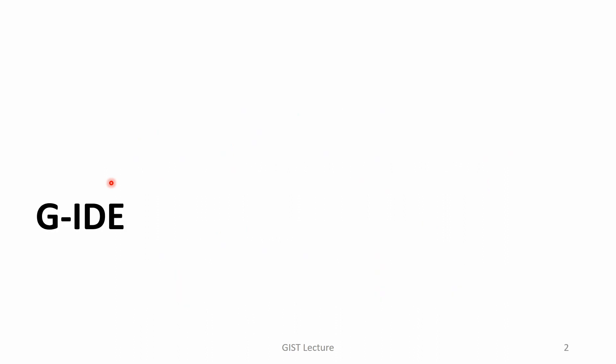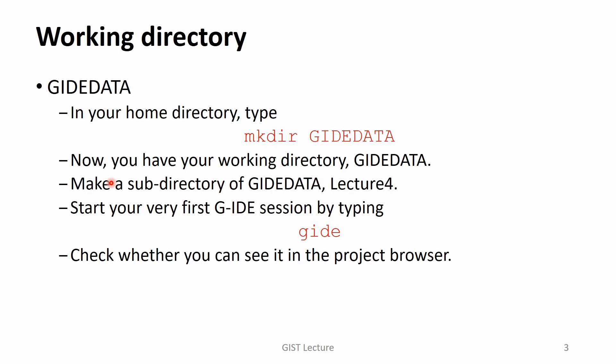First, let's start the JID program. In order to use JID, we must specify its working directory. In this course, we will use a directory called JID data as a working directory. First, in your home directory, type mkdir JID_data in capital letters. Now you have your working directory JID data.